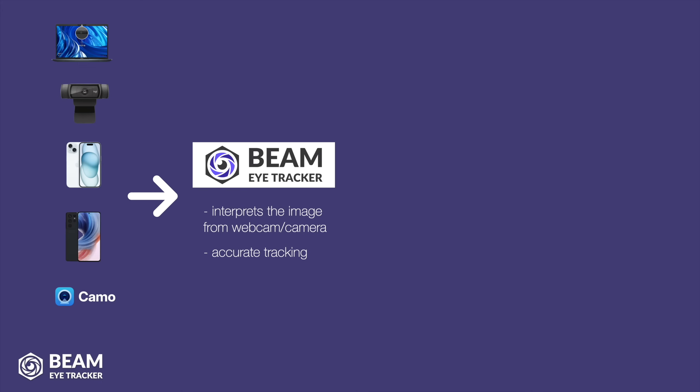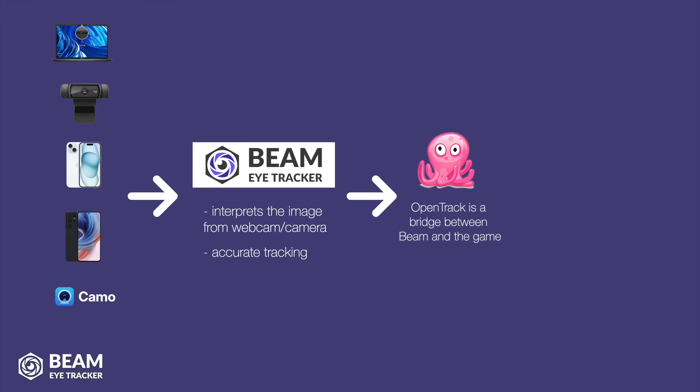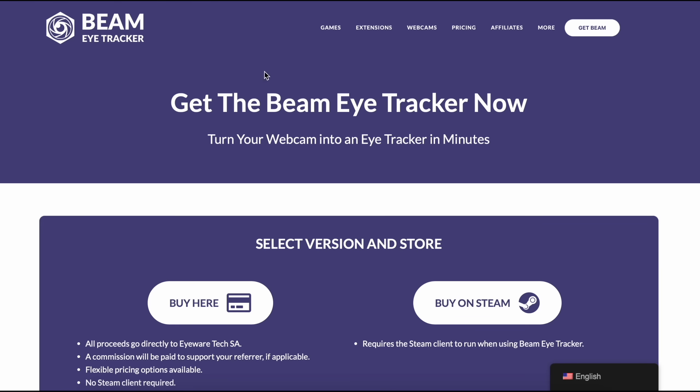What you need is a webcam or smartphone, Beam EyeTracker to ensure accurate eye tracking, and OpenTrack, which is going to take the tracking signal from Beam and utilize it within the game, so that your eye and head movement are translated into camera movement on all the axes inside the simulator.